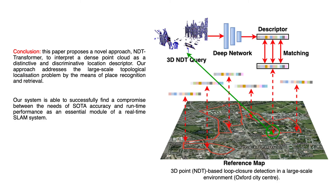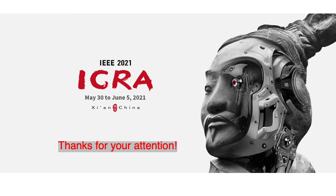In conclusion, this paper proposes a novel approach, NDT Transformer, to interpret a dense point cloud as a distinctive and discriminative location descriptor. Our approach addresses the large-scale topological localization problem by means of place recognition and retrieval. Our system successfully balances the needs of state-of-the-art accuracy and runtime performance as an essential module of a real-time SLAM system. Thanks for your attention — for more questions, welcome to join the interactive session.